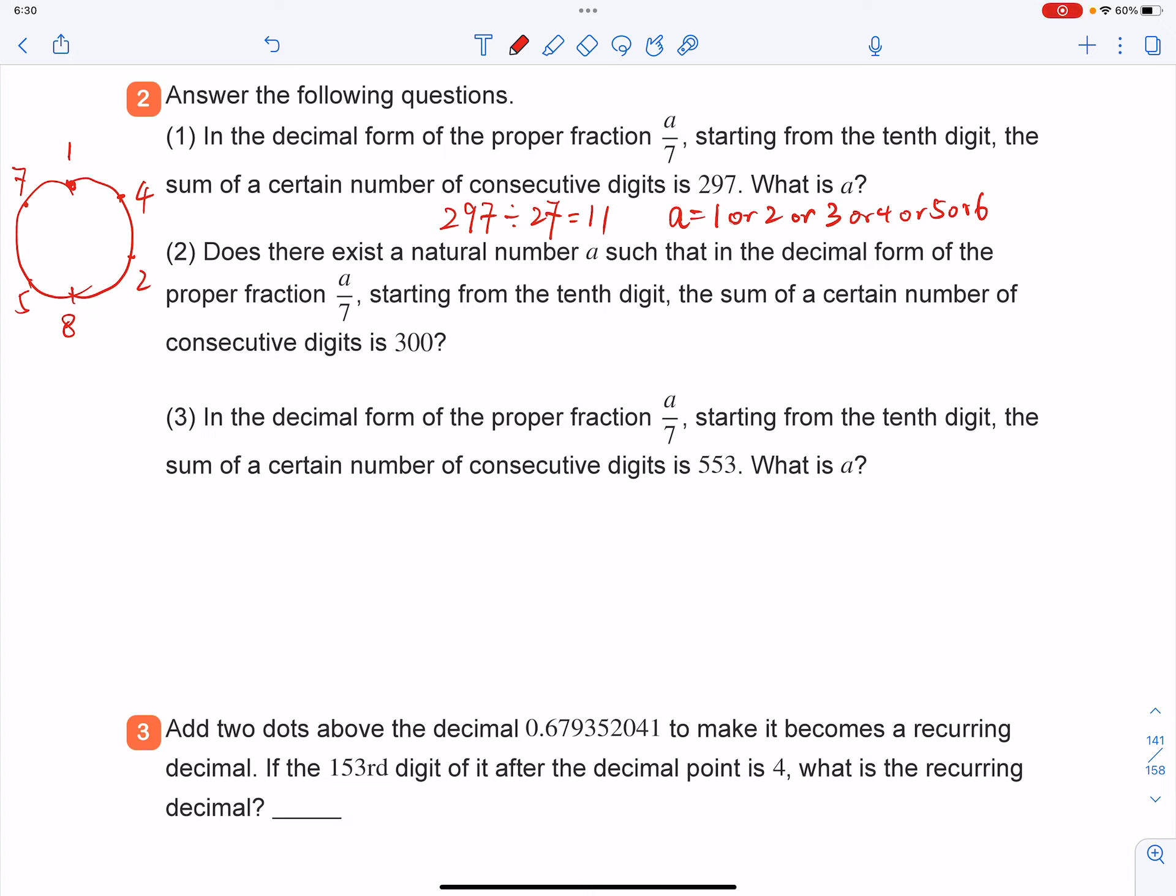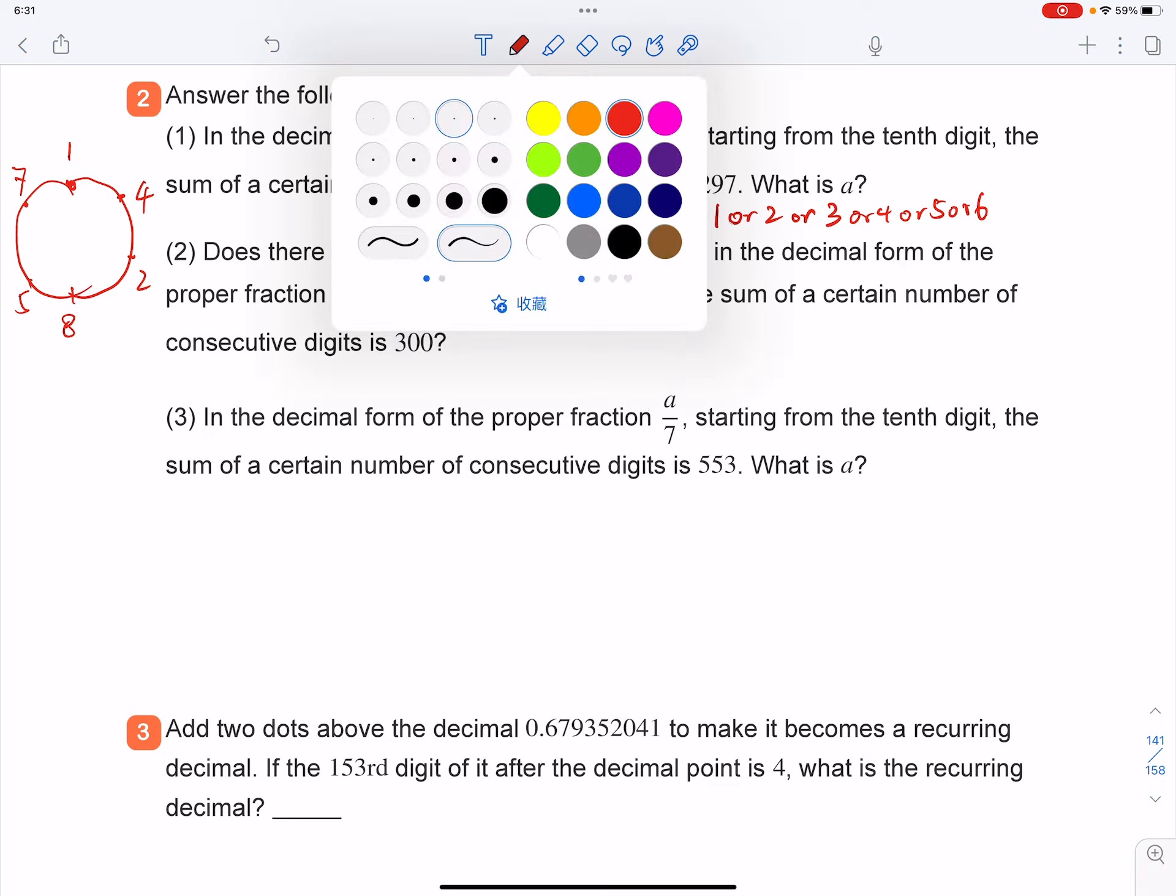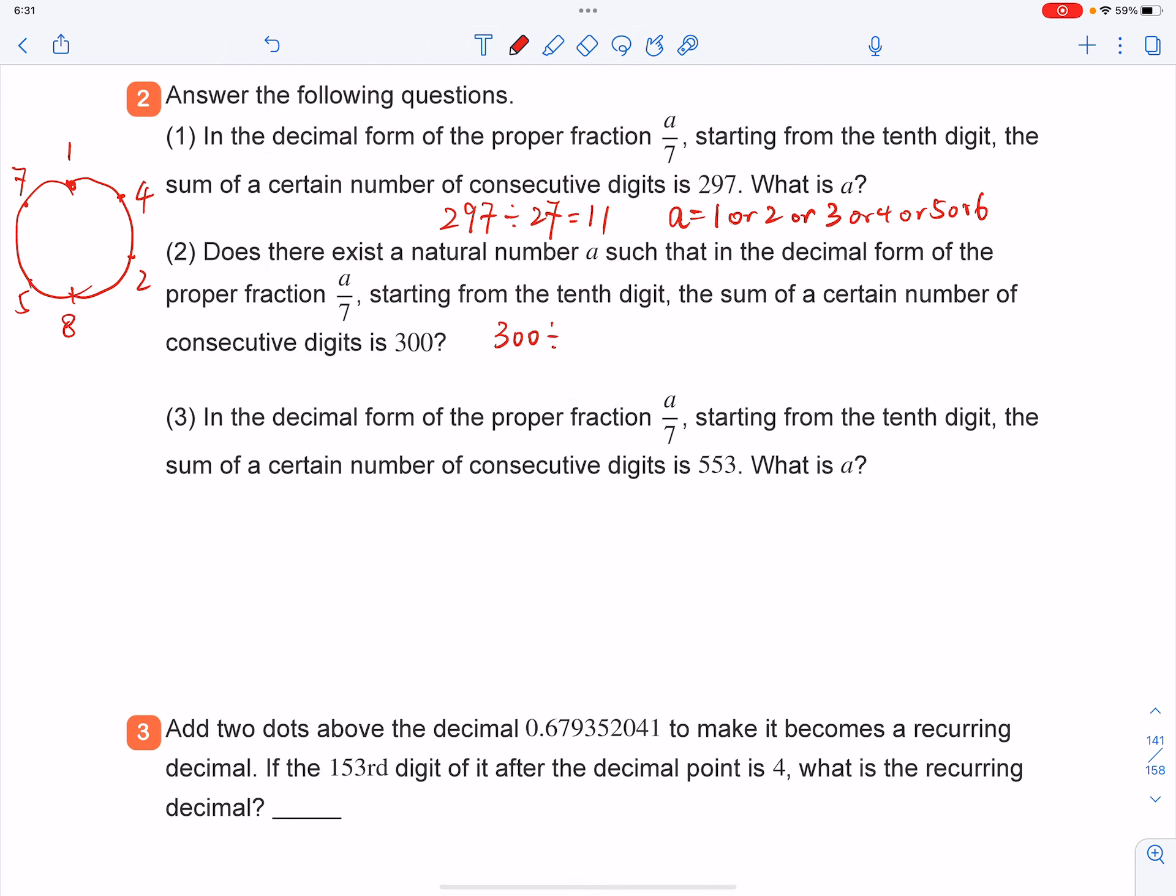And then second one, does there exist a natural number A such that in the decimal form of this fraction? Starting from the 10th digit, the sum of second number of consecutive is 300. So using the same method, 300 divided by 27 equals to...